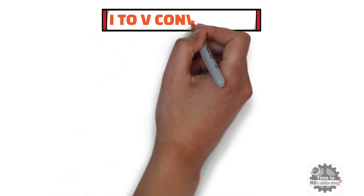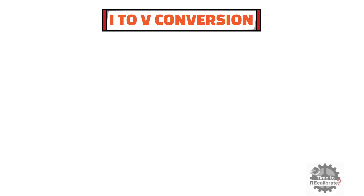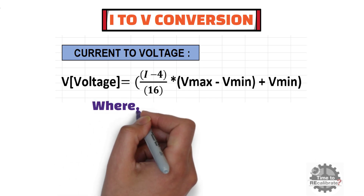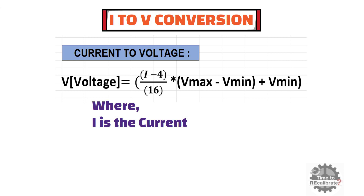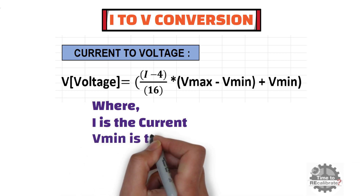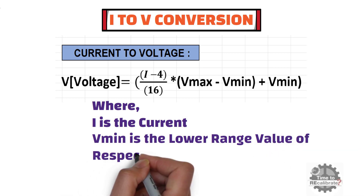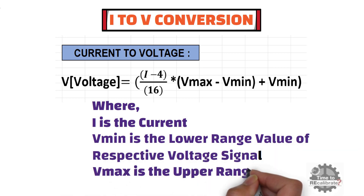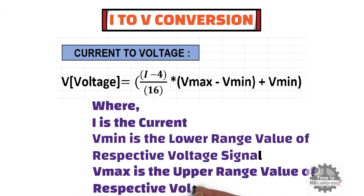In this section, you will learn about the current to voltage conversion formula and its example. As you can see, this is the standard formula to convert current into voltage. In this equation, I is the current and V is the voltage. Vmin is the lower range value of the respective voltage signal, and Vmax is the upper range value of the respective voltage signal.